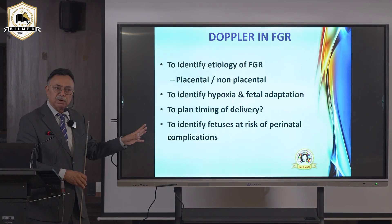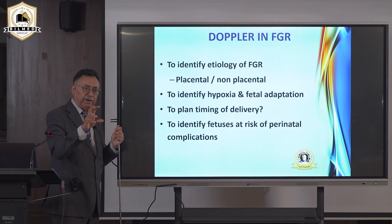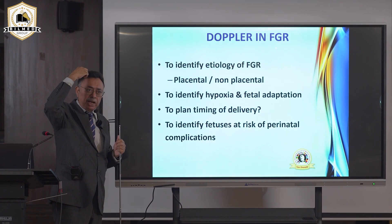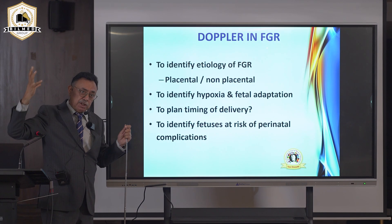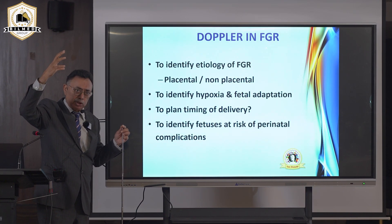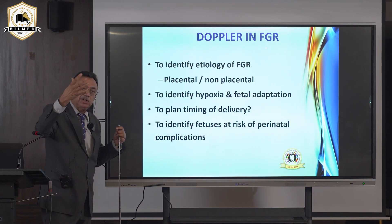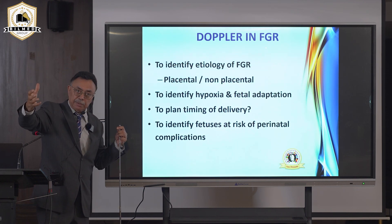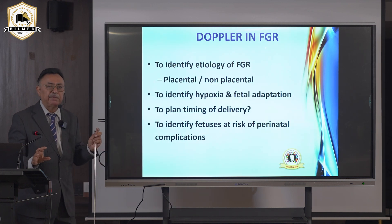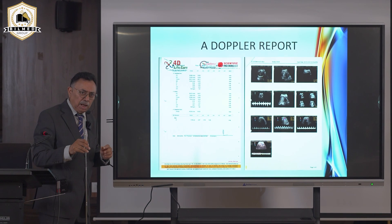Doppler in growth retardation identifies the etiology — placental or non-placental. The uterine artery identifies hypoxia. Hypoxia is identified when ductus venosus diastolic flow reduces, or when cerebral flow increases indicating the baby is redirecting blood to the brain. If the ductus venosus flow reaches zero, cerebral flow becomes very high, and umbilical flow reverses, it is time to deliver — otherwise the baby will die within 24 to 72 hours.